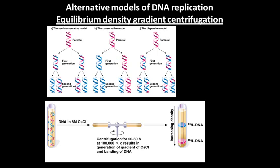To understand how DNA is replicated from one copy into two copies, we have several different models for DNA replication. In the early 1920s and 1930s, scientists were thinking about how DNA could be replicated, and they hypothesized different models. There are three main or major hypotheses of DNA replication. One is the conservative model, where the old strand will remain the same and a new strand is formed.